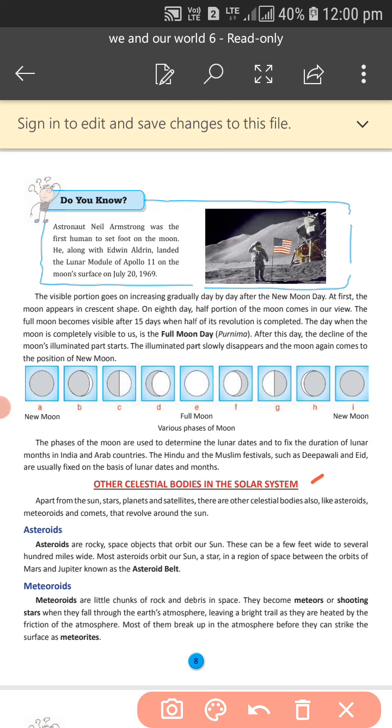Other celestial bodies like asteroids, meteoroids, and comets revolve around the sun. The planets and satellites, asteroids, meteoroids, and comets all revolve around the sun.